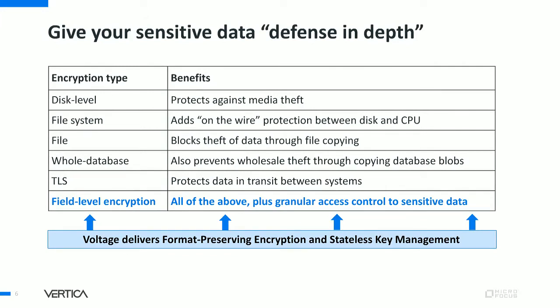What do we mean by defense in depth? Let's look at encryption types and the benefits they provide. We see customers implementing all kinds of different protection mechanisms: disk-level protection, file system protection, protection on the files themselves, protecting the entire database, protecting transmissions via TLS or other protected tunnels. Then we look at field-level encryption — that's what we're talking about today. That's all the above perimeter and platform protections, plus we're giving you granular access control to your sensitive data.